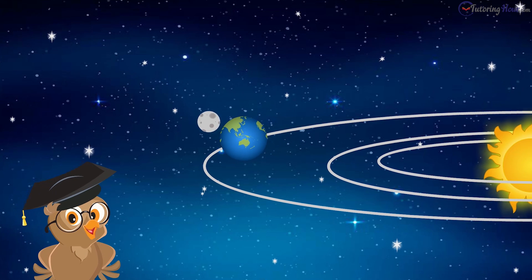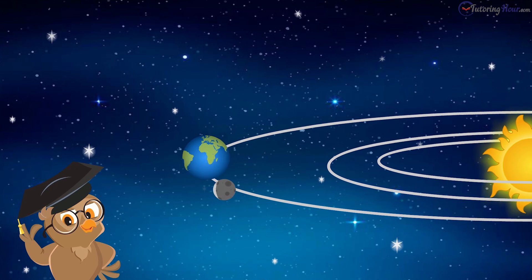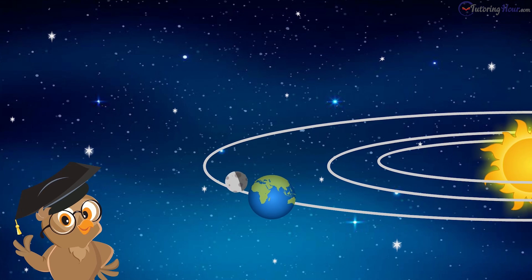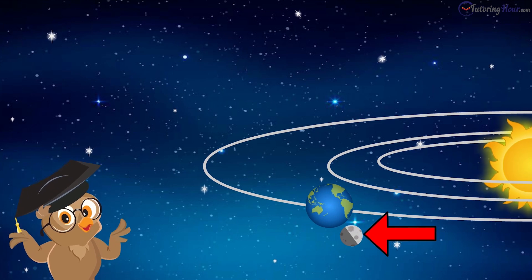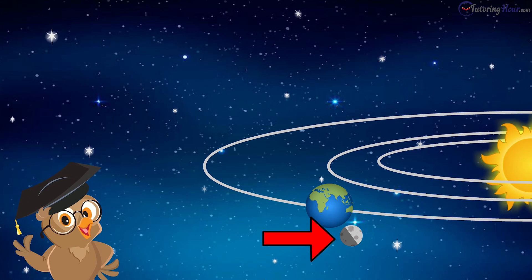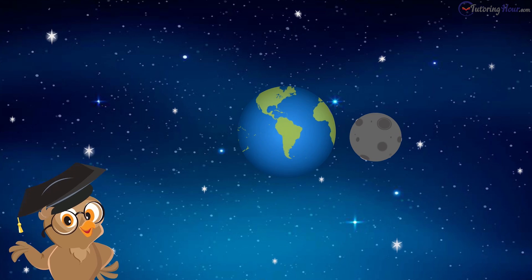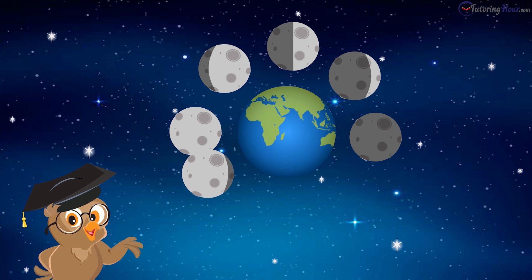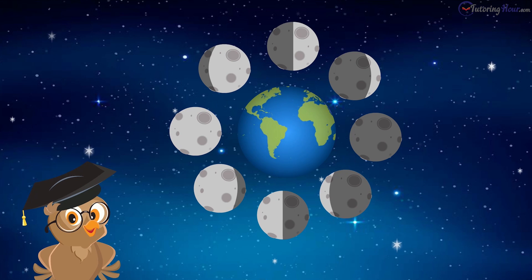On its journey around the earth, the sun lights up different parts of the moon, making the moon appear to change shapes. The part of the moon facing the sun is lit up, and the part that's away from the sun is dark. There are eight phases of the moon, each of which is named after how much of the moon is visible from the earth.